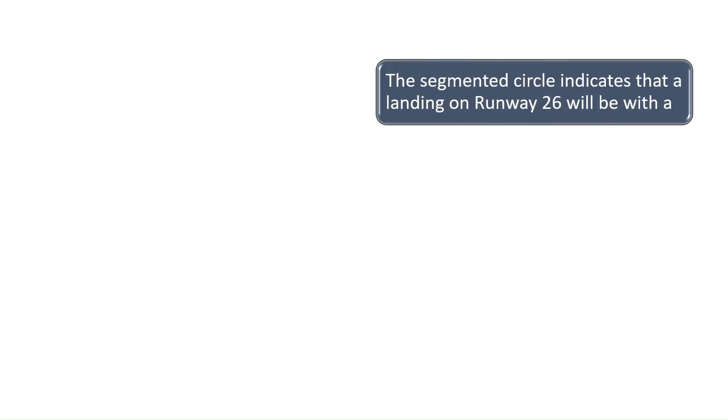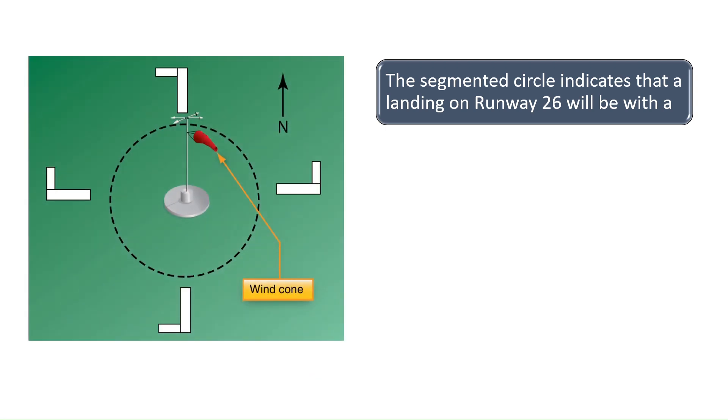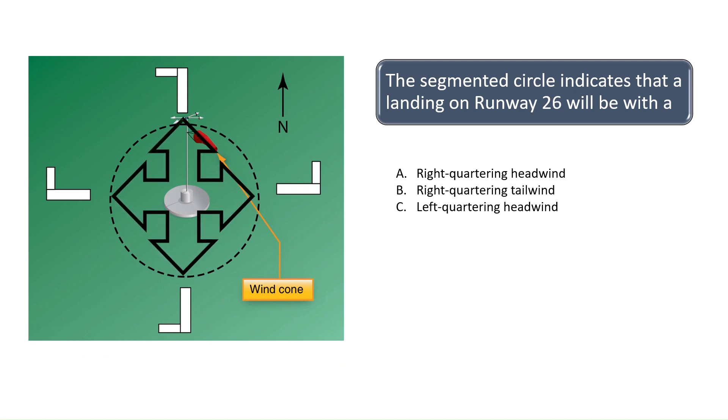The segmented circle indicates that a landing on runway 2-6 will be with A. As you can see from the figure on the left, a pilot would make a right-hand traffic pattern for runway 2-6. The traffic pattern for landing on runway 2-6 is highlighted by the orange arrows.